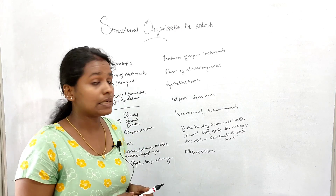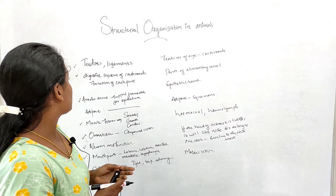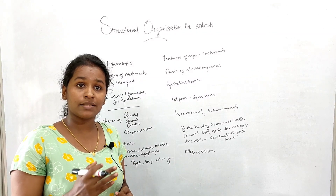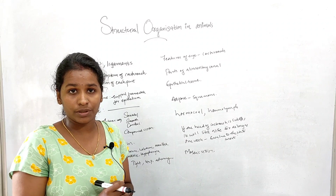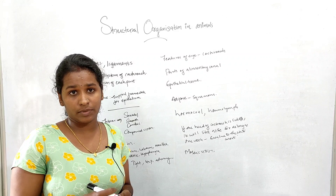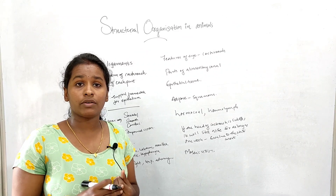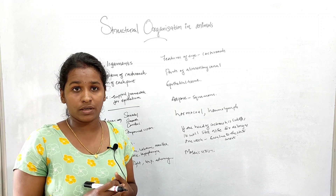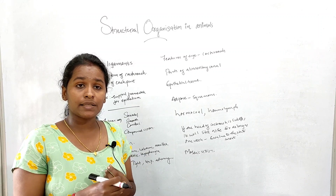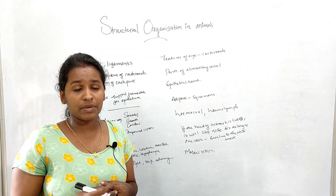In structural organization in animals, we need to discuss tendons and ligaments. Tendons connect muscles to the skeleton, while ligaments connect bones at the joints. The tendon is the fiber-like portion connecting muscles to the skeleton, and ligaments connect at the joints.